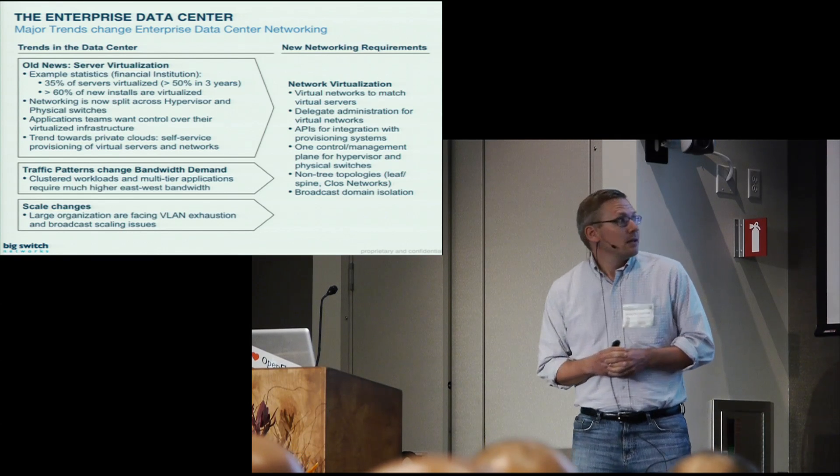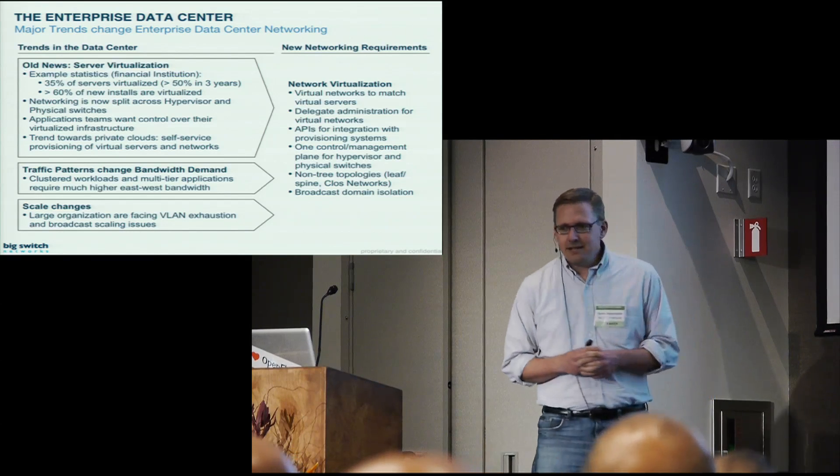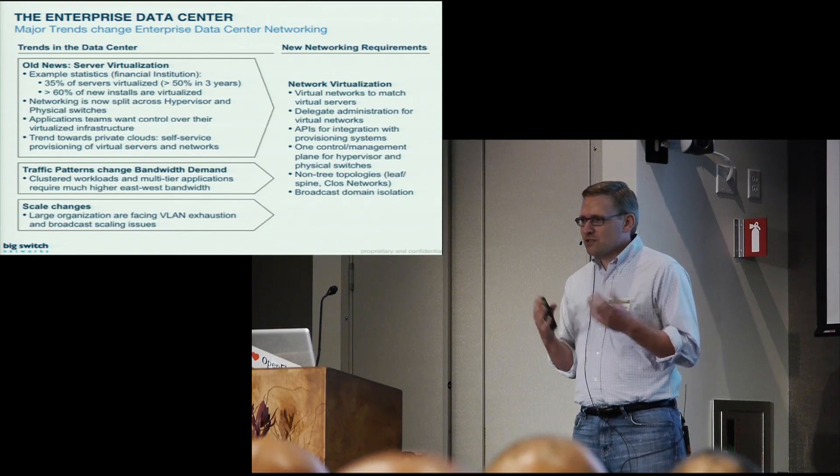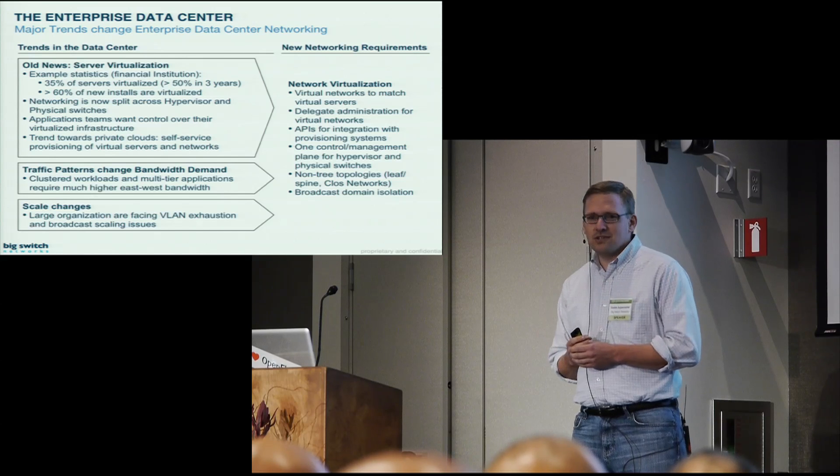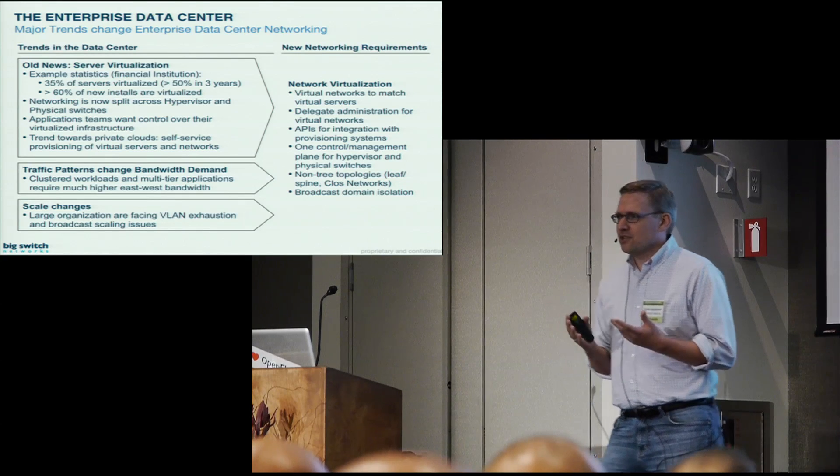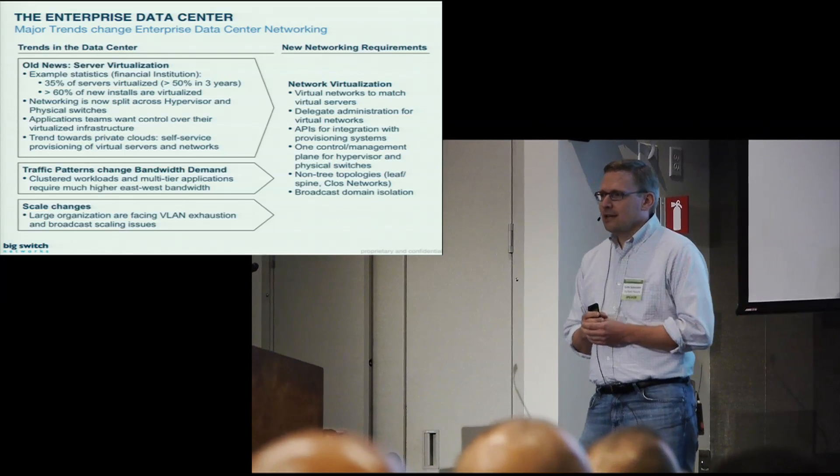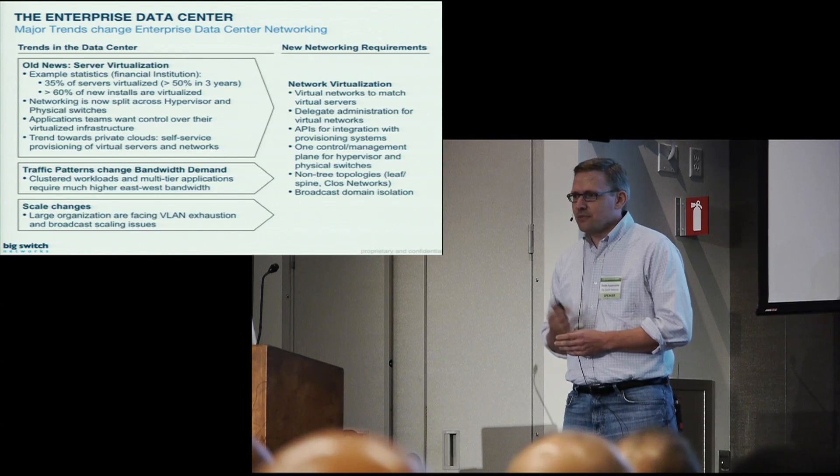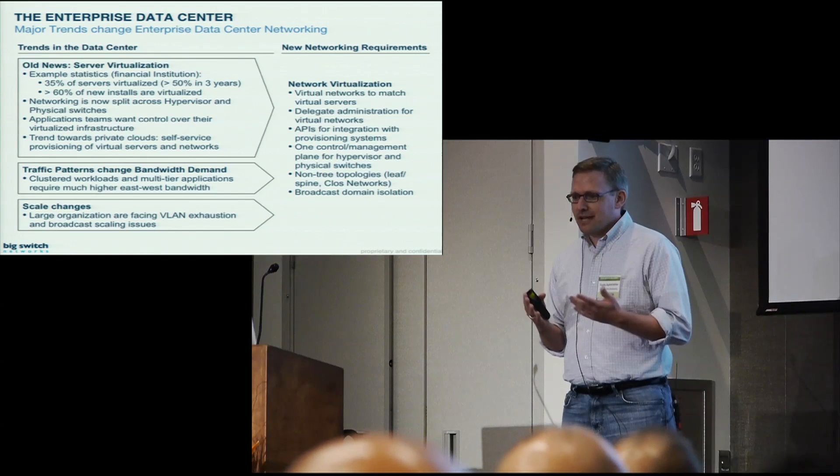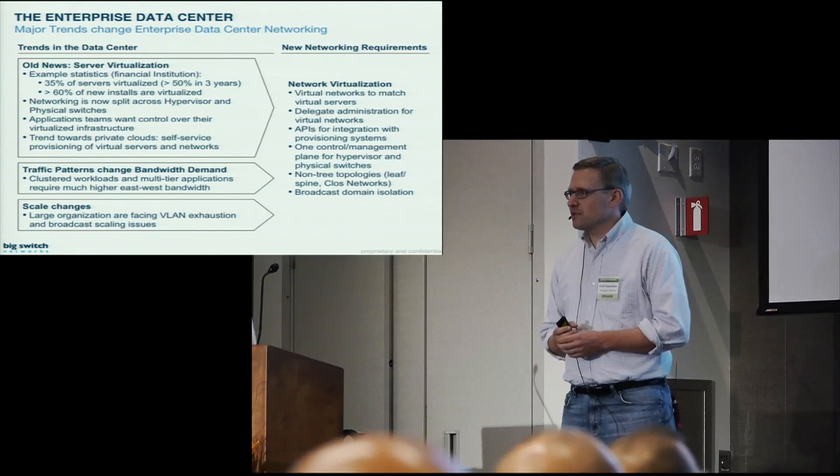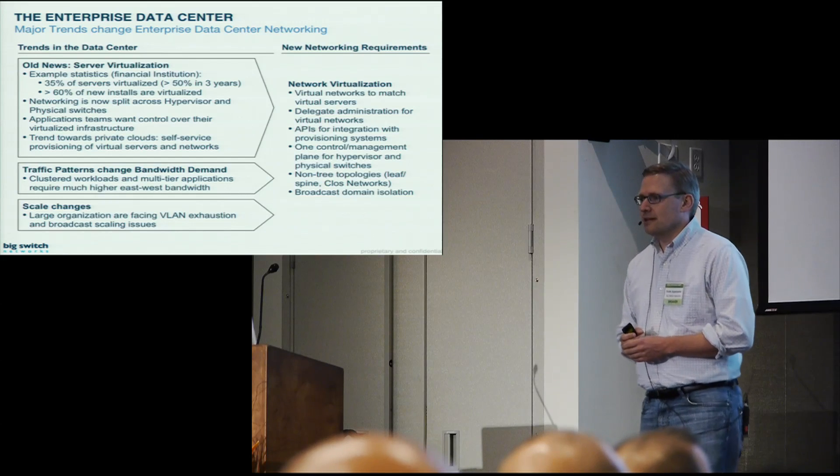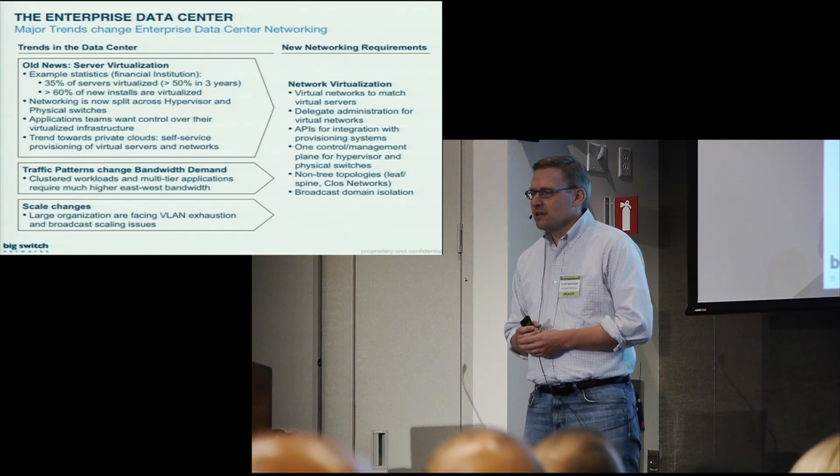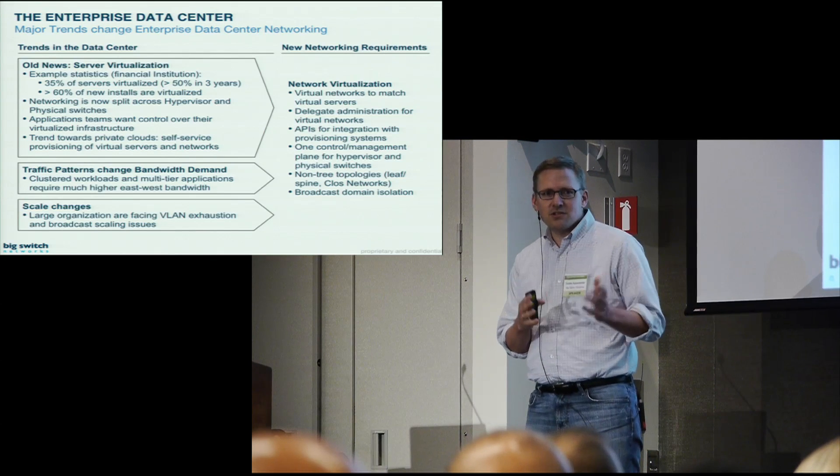Currently in the data center, there's a lot of change going on. This is a very busy slide, and you've seen many of the major topics already today. The biggest trend of all is server virtualization. It has completely changed the OPEX calculus on the compute side, but it's now bleeding over to the networking side. Just to give some sample statistics, this is from a financial institution I recently talked to. In their case, about 35% of all servers are virtualized. They're hoping to get that over 50% within three years. Of the new servers coming online, over 60% are already virtualized. We're looking at a mixed environment, but virtualization is definitely the trend.